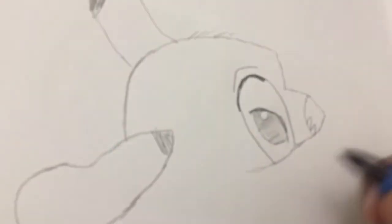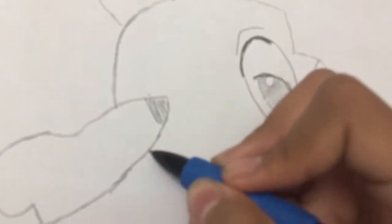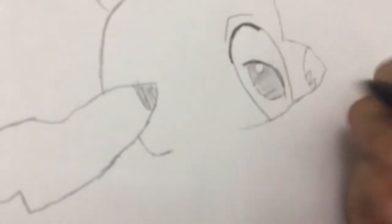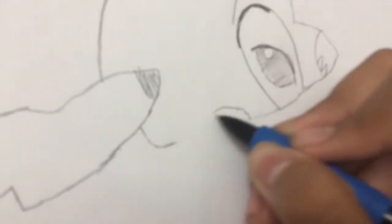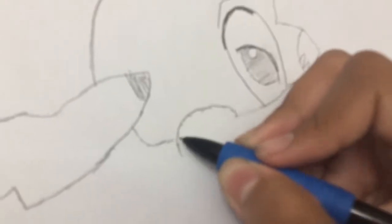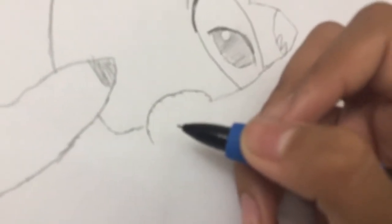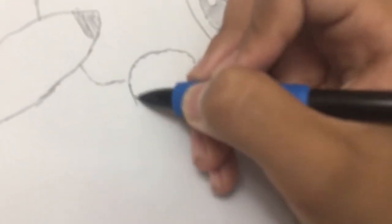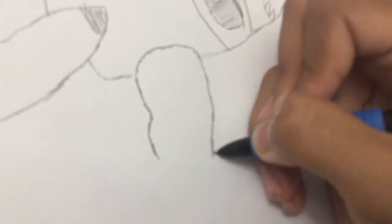And next we're going to draw Stitch's hand and legs. So here comes a hand. So you come right down like this and curve in.